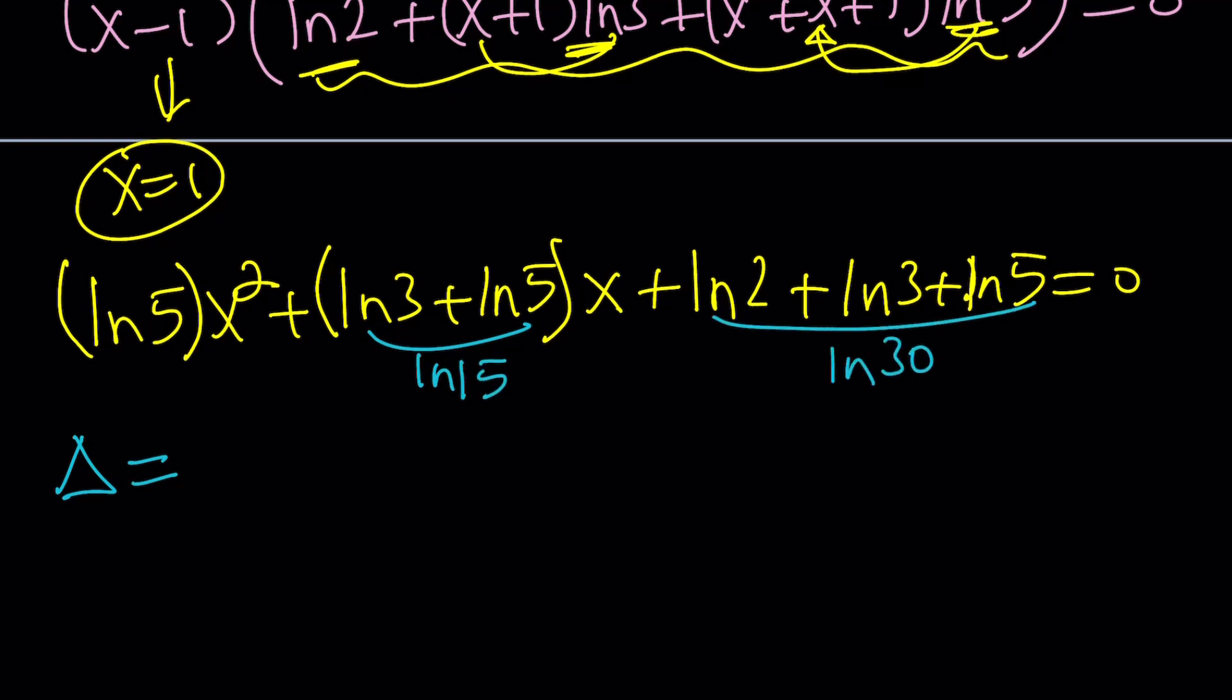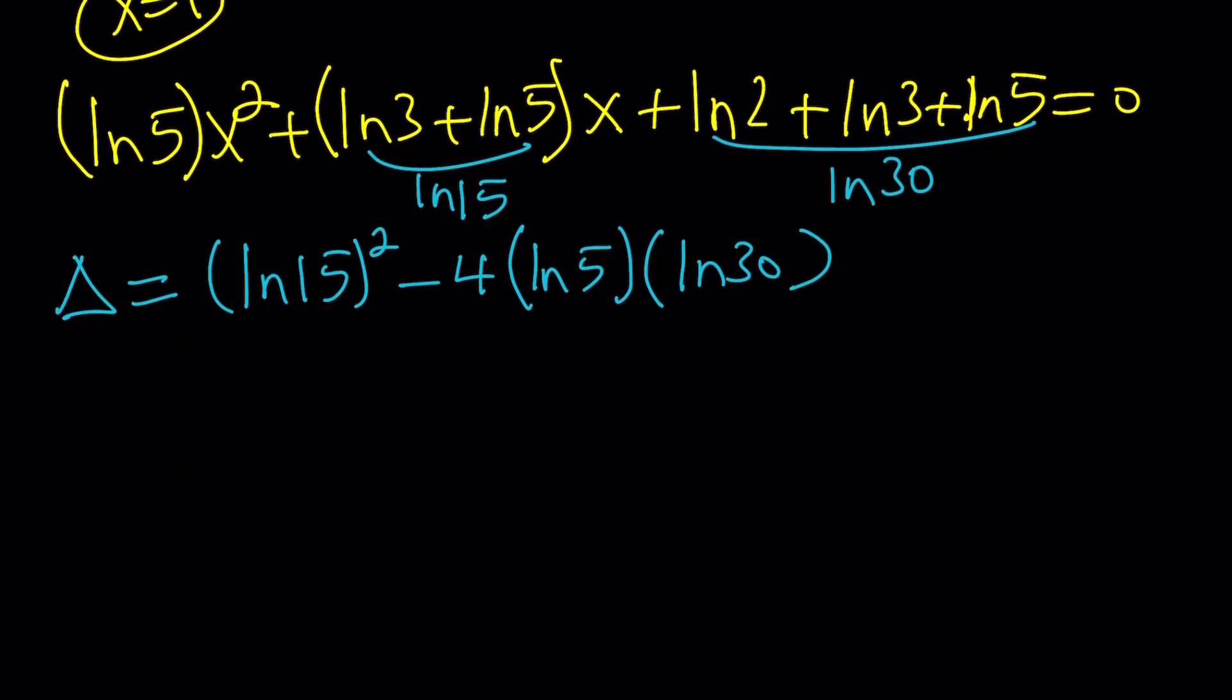Kind of condense them so that finding discriminant will be a little easier. So, the discriminant in this case would be b squared minus 4ac. And notice that ln 15 squared is going to be less than 4 times ln 5 times ln 30. Why is that? If you think about it, this could be written as ln e to the fourth. So, e to the fourth is a pretty large number.